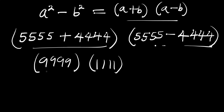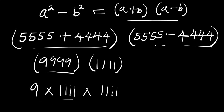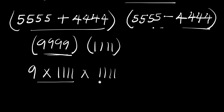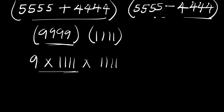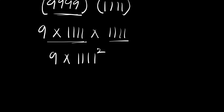Since we have 9999 here, we can factor out 9, so we are going to have 9 times 1111. Remember if you multiply this you get 9999. So that means at this point we have 1111 times 1111, and we can write this as 9 times 1111 raised to the power of two. We can also rewrite this 9 as 3 raised to the power of two, times 1111 raised to the power of two.